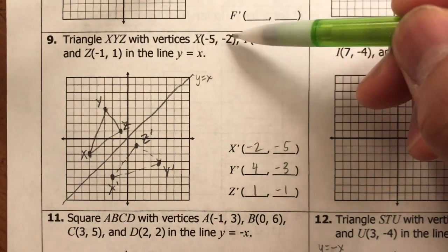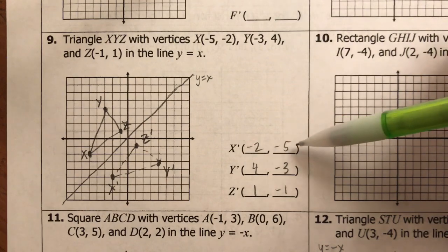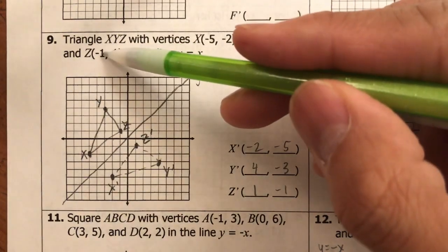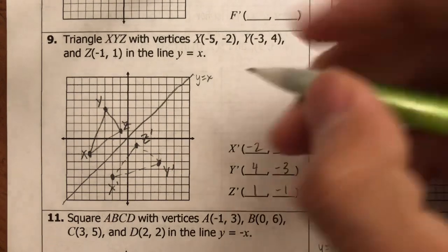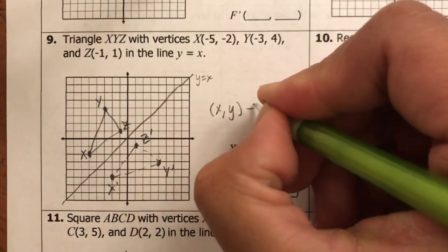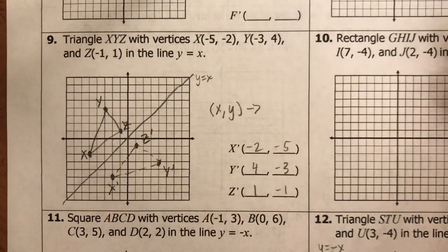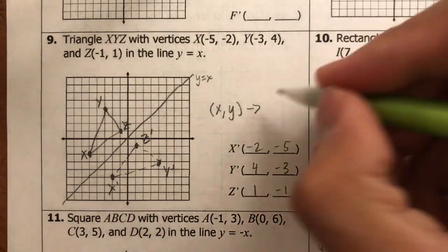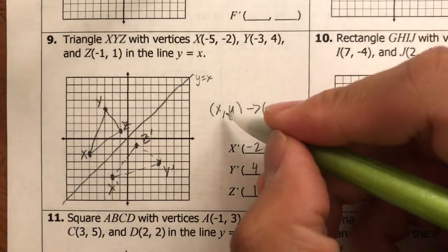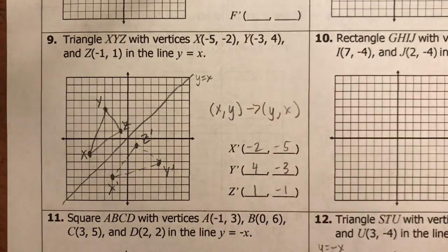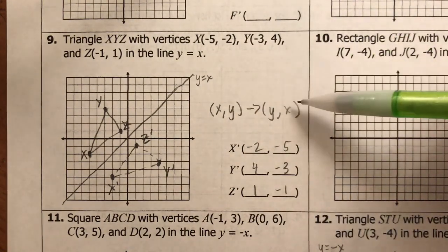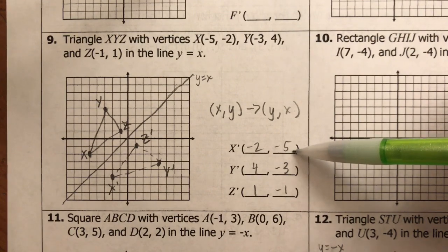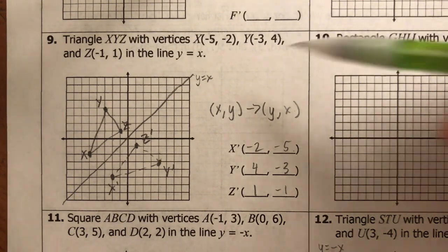Looking at the rule: X was at negative five, negative two — now it's at negative two, negative five. Y was at negative three, four — now it's at four, negative three. Z was at negative one, one — now it's at one, negative one. The rule for reflecting over y equals x is: every point (x, y) becomes (y, x). We simply switch the coordinates — whatever was x moves to the other side of the comma.